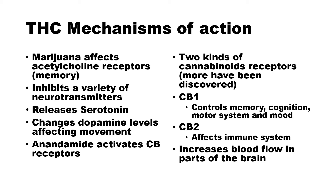THC's mechanism of action. Marijuana affects acetylcholine receptors, which are connected to memory. It inhibits a variety of neurotransmitters. It releases serotonin, which changes mood and perception of time and space. It changes dopamine levels and affects movement. There are specific anandamide receptors activated by the CB receptors. Two main kinds of cannabinoid receptors have been identified, with more discovered since. CB1 controls memory, cognition, motor system, and mood. CB2 affects the immune system. There is also increased blood flow in parts of the brain.